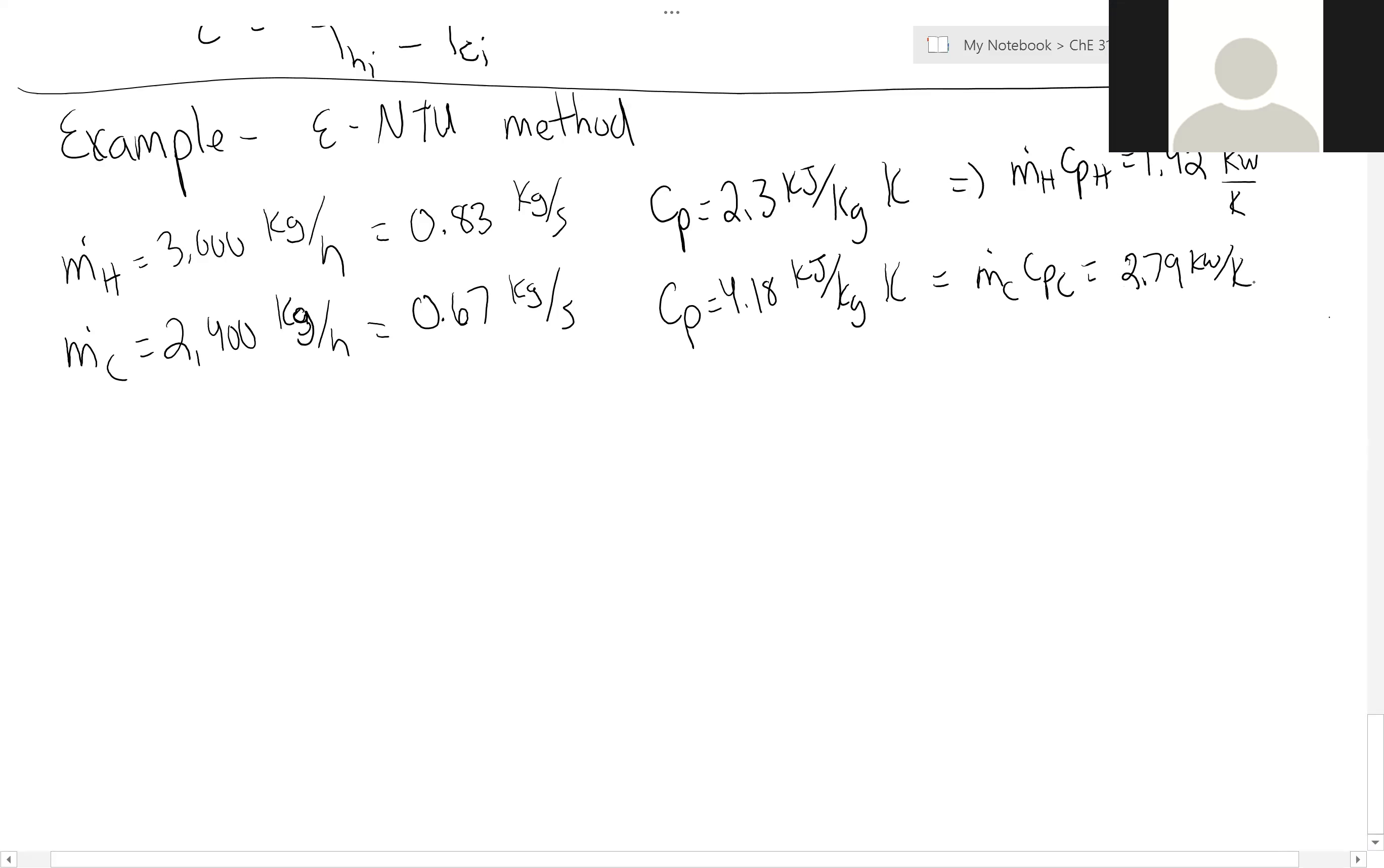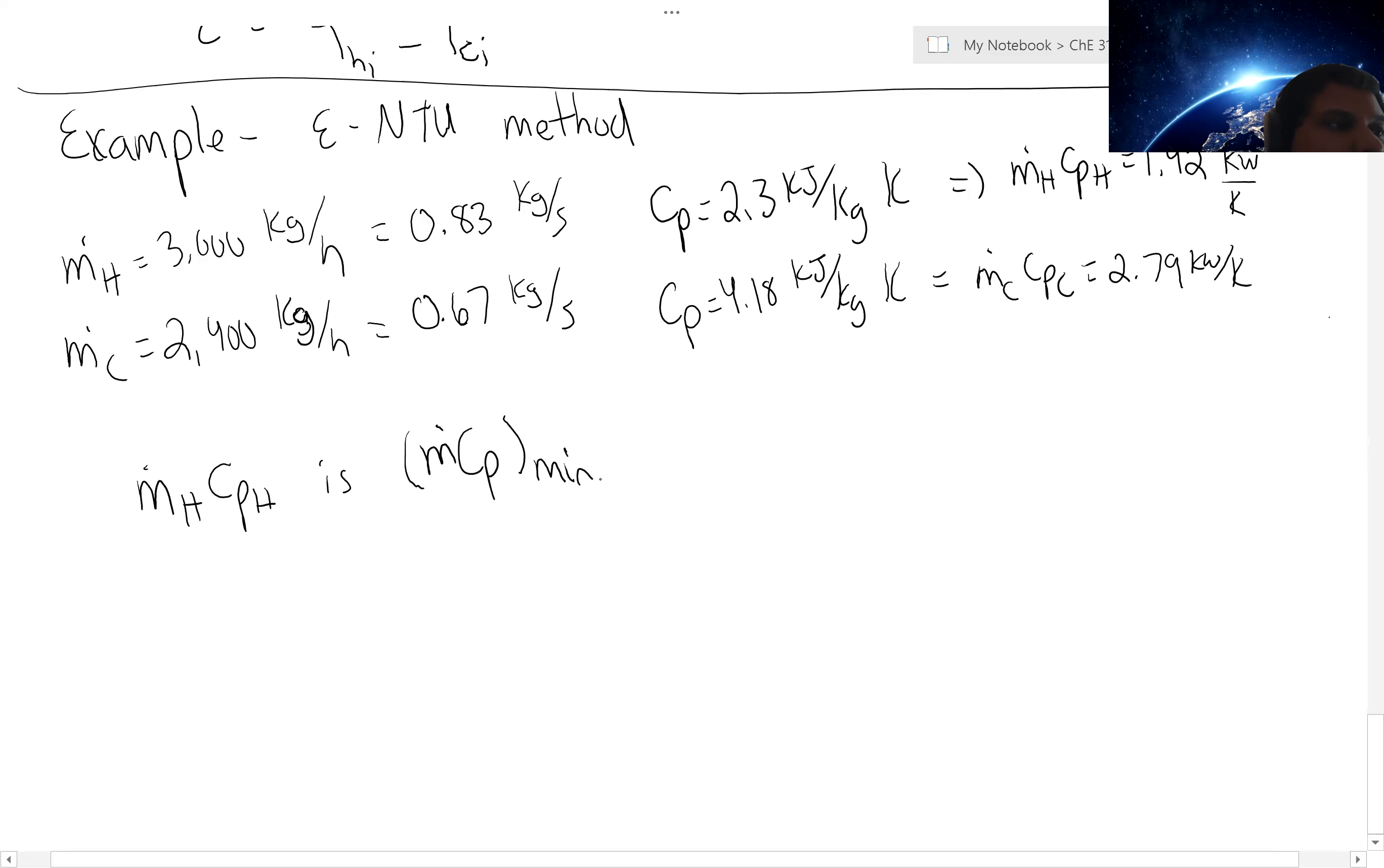Now, if we're looking at the cold stream, my heat capacity there is going to be 4.18 kilojoules per kilogram Kelvin, which means my M C_P cold is about 2.79 kilowatts per kelvin. Is that a 2.79 or 3.79? It's a 2. Thank you.